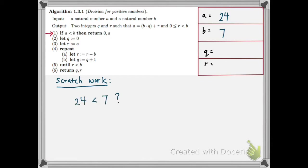So step one, I'm looking, is A less than B? So is 24 less than 7? The answer is no, and so I move on. I let Q equal 0, and I let R equal the value for A. So R is 24.